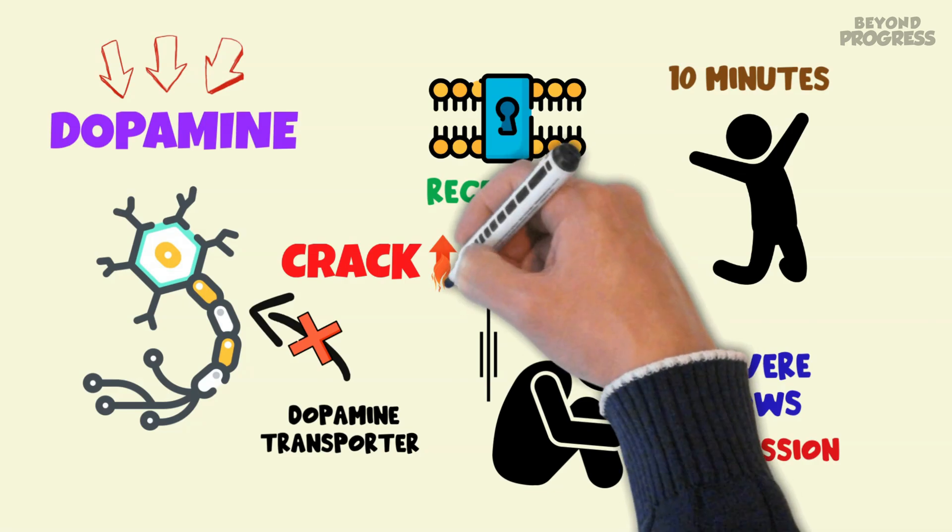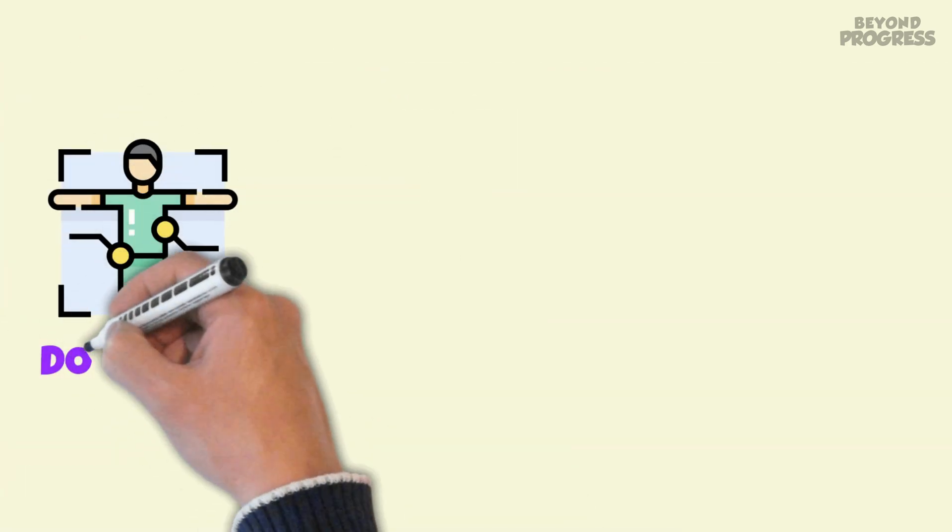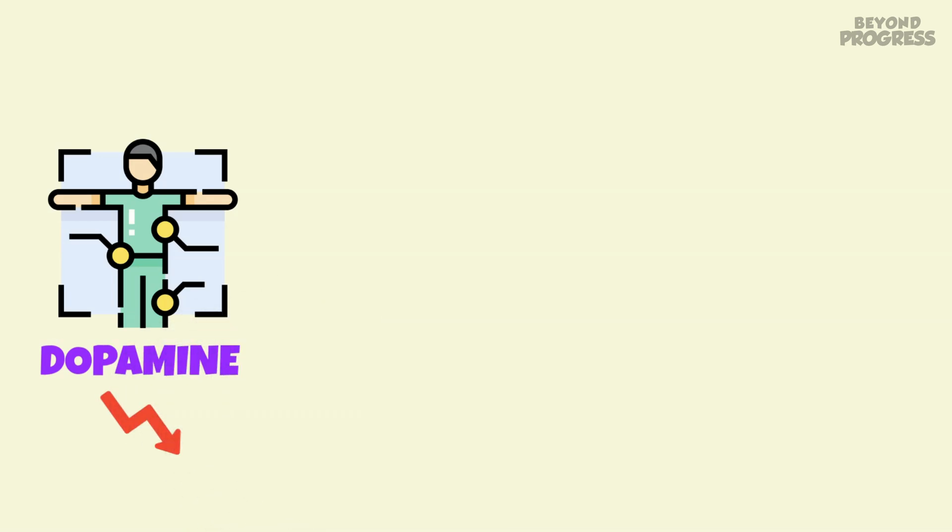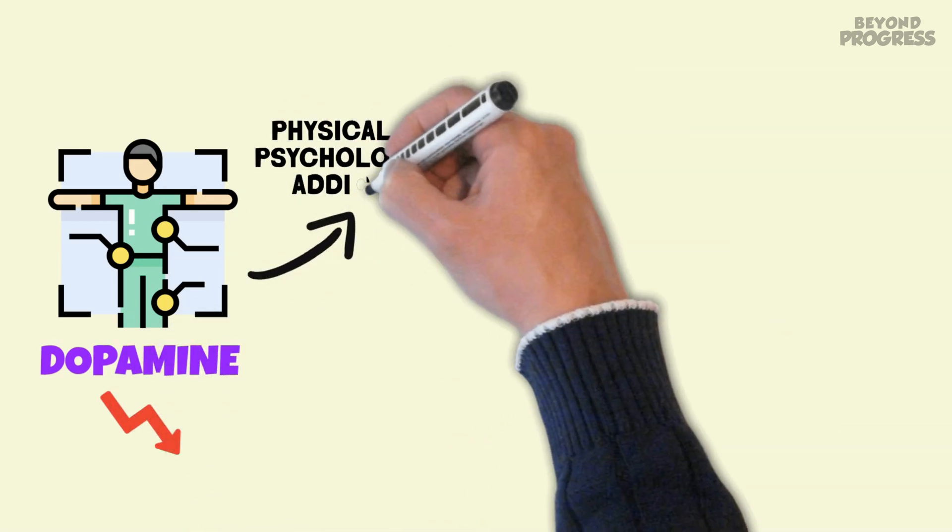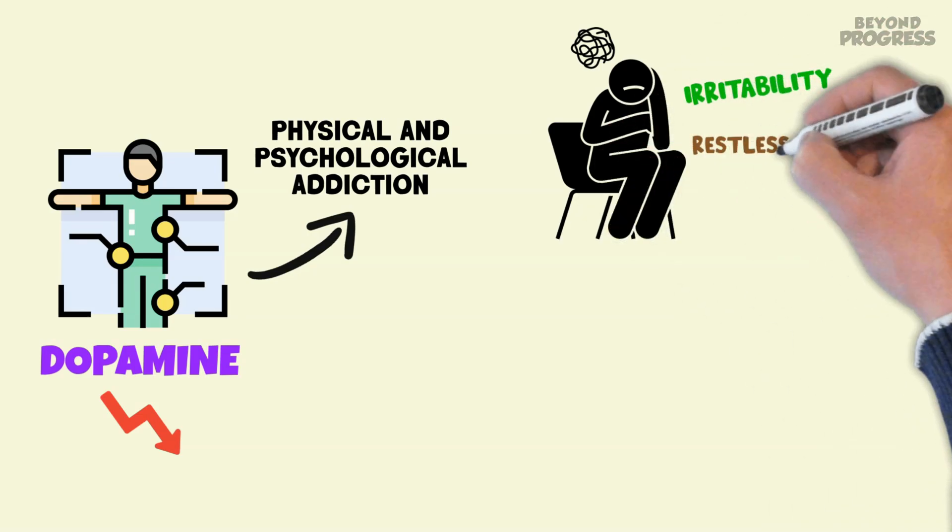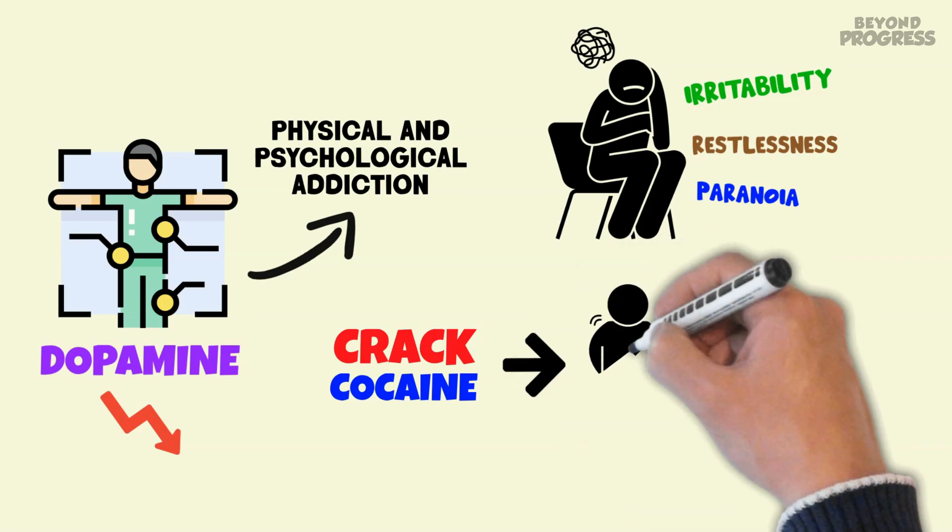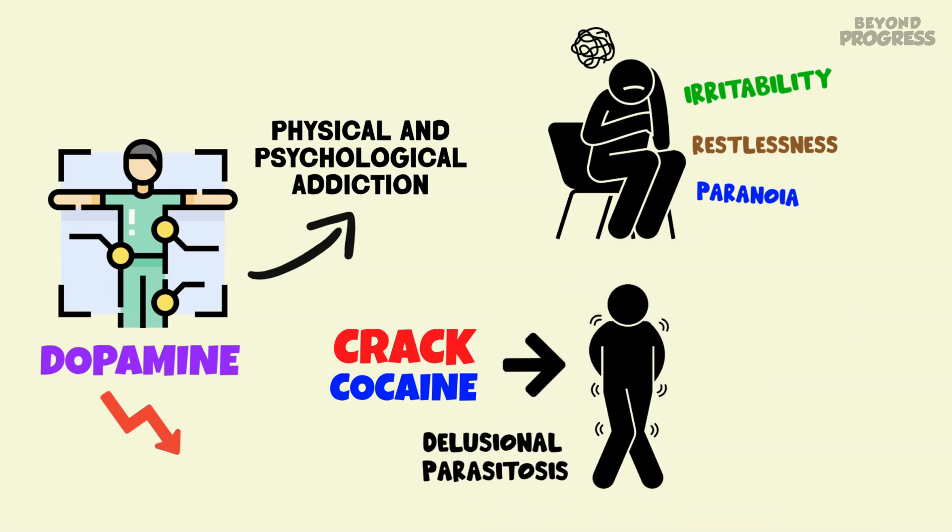This cycle often drives users to consume more crack to regain the high. The body's natural dopamine replenishment is slow, fostering physical and psychological addiction. Users may also experience increased irritability, restlessness, and paranoia.